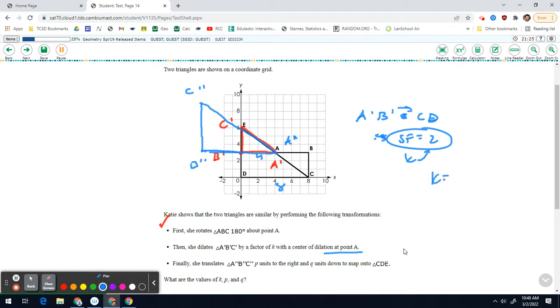So that K value was two. And now we need to translate P units right and Q units down so it maps onto triangle CDE. Well, A double prime has to map onto C. So to get A double prime onto C, we have to go one, two, three, four to the right. And one, two, three, three down. So we're going to go four right and three down. That's your translation rule.